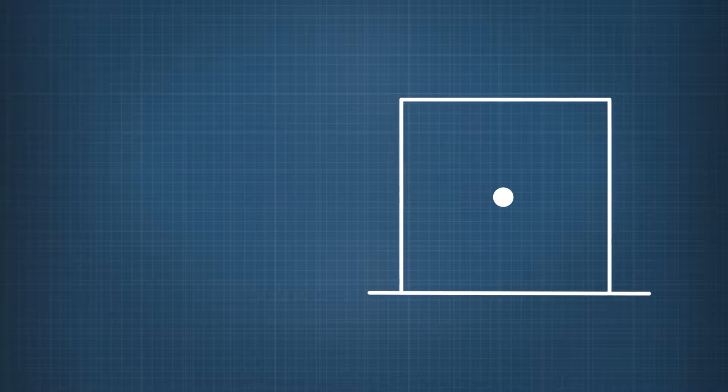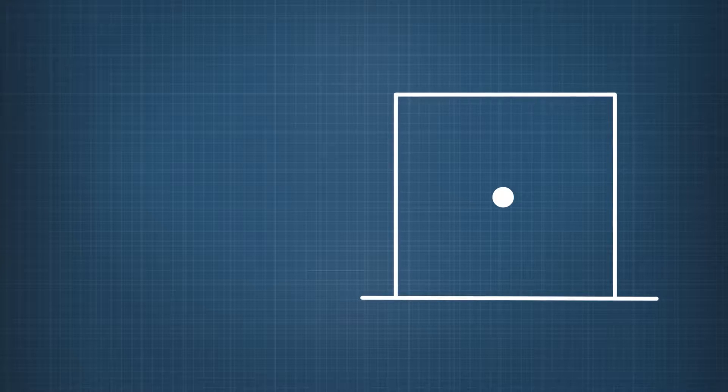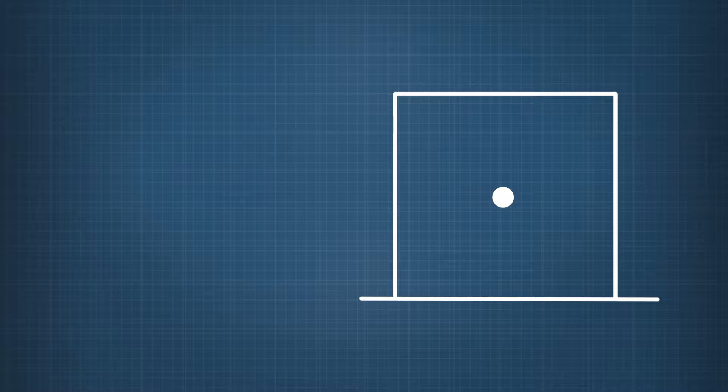Now keep in mind, forces are a vector quantity. So they're written as arrows that have a magnitude and direction. When you're drawing these forces, only draw forces that are acting directly on the object, and draw all of them from the dot at the center.